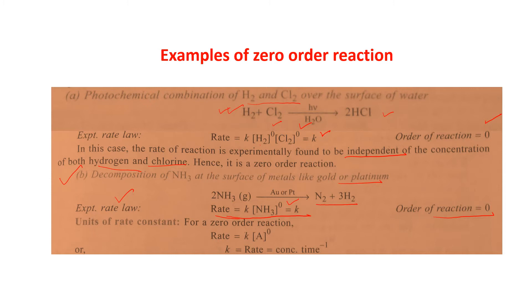Unit of rate constant for zero order reaction: for zero order, K is very specific. Since rate = K[A]^0, we get K = rate. The unit of rate is concentration × time⁻¹, so the unit of K for a zero order reaction is concentration · time⁻¹ (e.g., mol L⁻¹ s⁻¹).